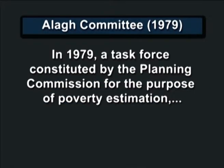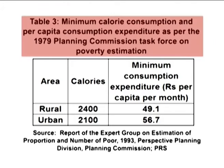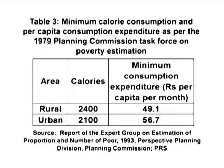Then came the Alagh Committee in 1979. A task force constituted by the Planning Commission for the purpose of poverty estimation, chaired by Y.K. Alagh, constructed a poverty line for rural and urban areas on the basis of nutritional requirements. Table 3 shows the nutritional requirements and related consumption expenditure based on 1973-74 price levels recommended by the task force. Poverty estimates for subsequent years were to be calculated by adjusting the price levels. The estimates show that the minimum calorie consumption should be 2400 calories for rural people and 2100 calories for urban people.